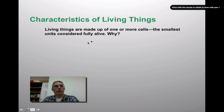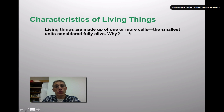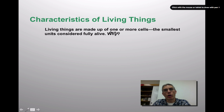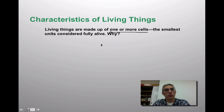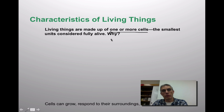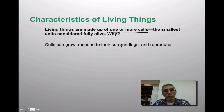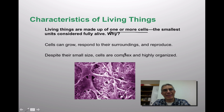The very first characteristic is that if you're looking at something alive, we assume it's going to be made up of one or more cells. The cell is actually considered the smallest unit that is fully alive — it basically has all eight characteristics we would use to identify something as living. Cells can grow, they can respond to their surroundings, and they can reproduce. Those are kind of like the top three.